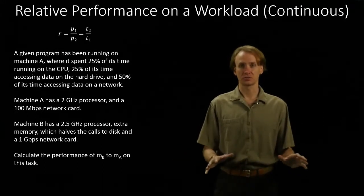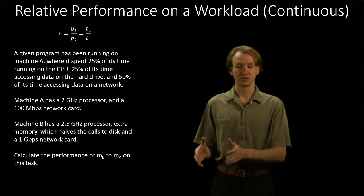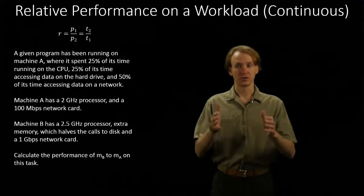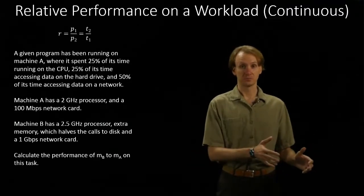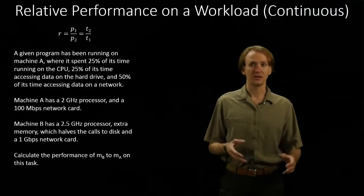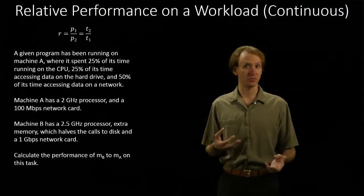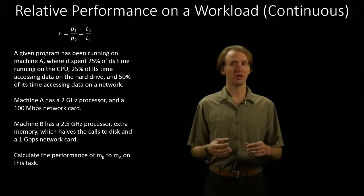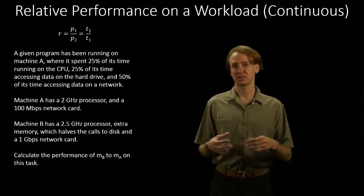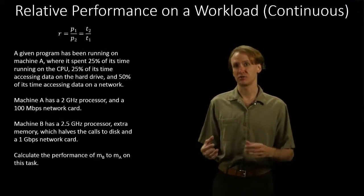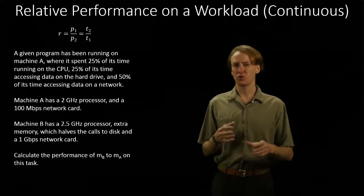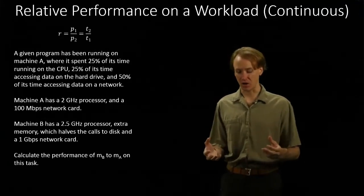In this case, we'll assume that our CPU doesn't do any of that. It's either going to run the CPU, the hard drive, or the network. And in this case, we know something about the properties of both machines, and we're going to be looking at how that changes the expected execution time for machine B, even though we don't really know a whole lot about what machine A is spending its time on.